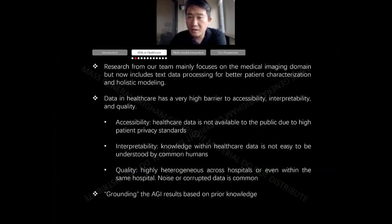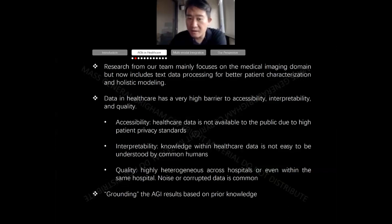Data in healthcare has a barrier, which is why we need collaborative efforts. Right now we have two of the largest hospitals in the United States — Mass General and Mayo — gathering cross-institution data to support investigations. Some important assumptions are that we want high quality data, good interpretability of the model, and ensure accessibility of data by the models so that large models can be trained. Finally there is the grounding of AGIs with domain knowledge — how domain knowledge can be fused with the model.